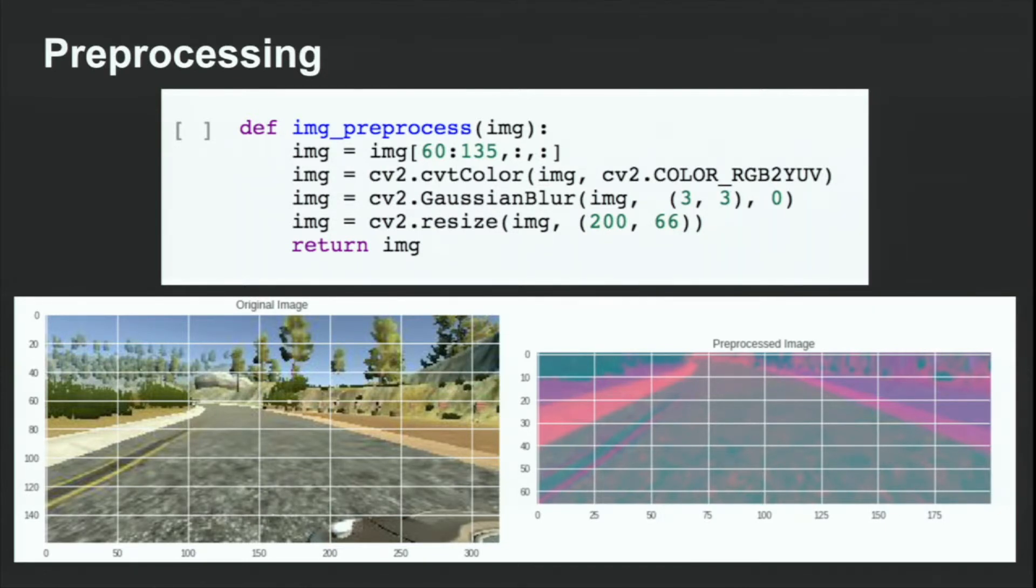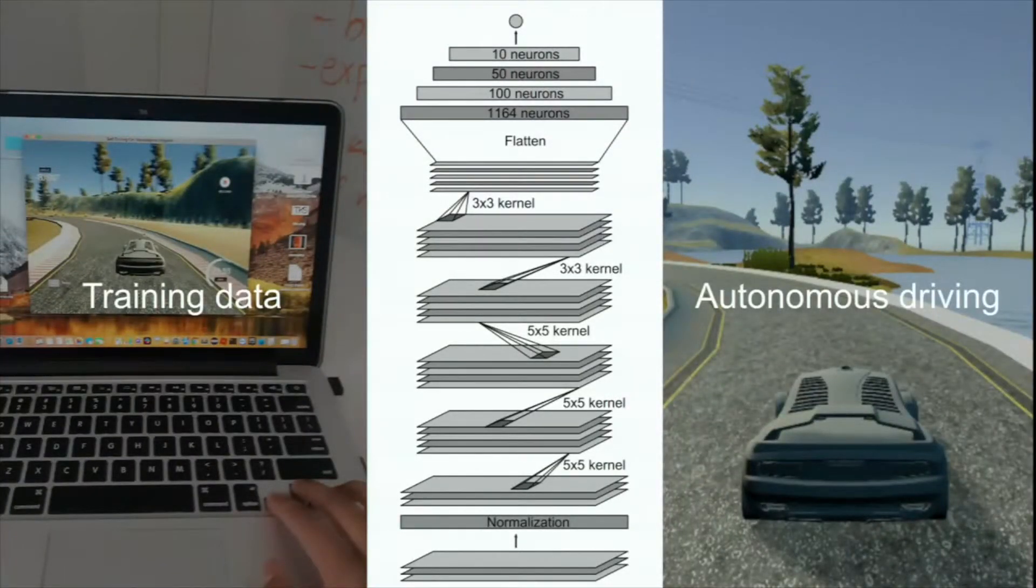Then the last thing we do is we change the color scheme to a YUV color scheme. Originally we have RGB, which is red, green, blue, which means three different color channels. I'm not a hundred percent sure what YUV stands for, but it has been proven to be way more efficient for computer vision purposes.